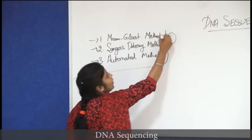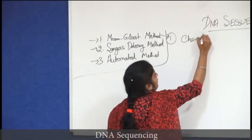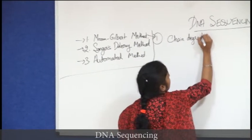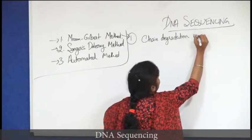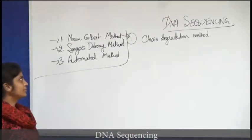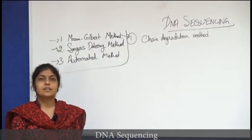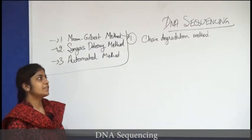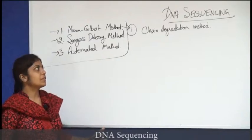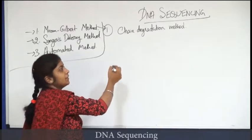This method is also known as the chain degradation method. This method is not generally used nowadays; nowadays we generally use Sanger's method of DNA sequencing, but the Maxim Gilbert method was used previously. The steps involved in this method are as follows.